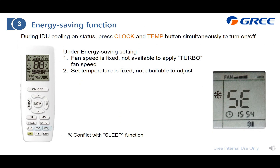The energy saving function: during indoor unit cooling mode, press the clock and temperature buttons together. The unit will then enter energy saving mode. Under this setting, the fan speed is fixed and cannot be adjusted to turbo mode, and the set temperature is also fixed and not available to adjust. Additionally, this energy saving mode is compatible with the sleep function.